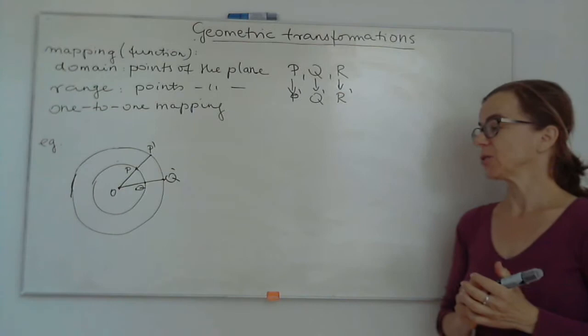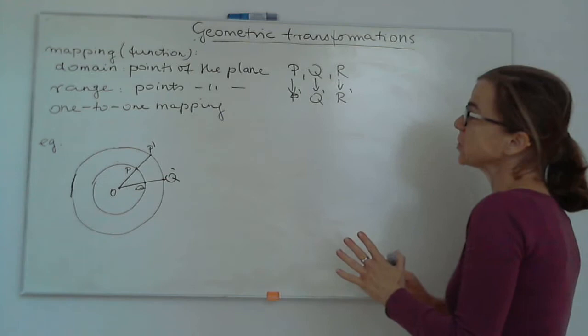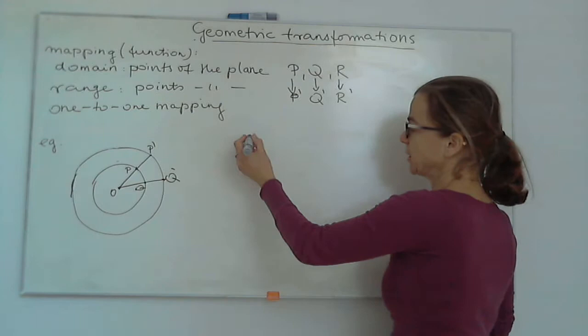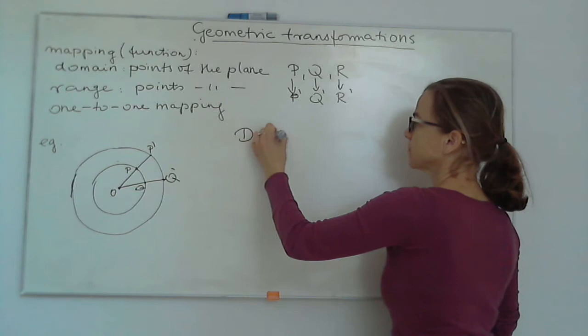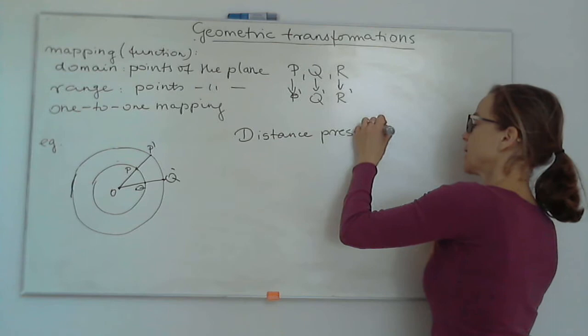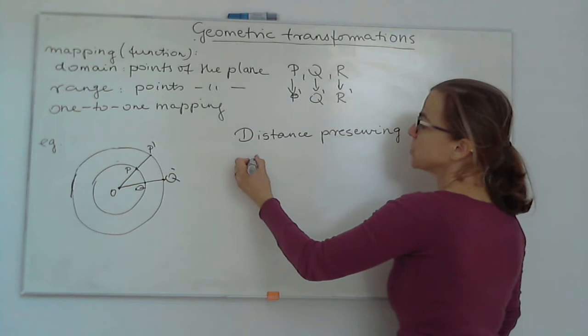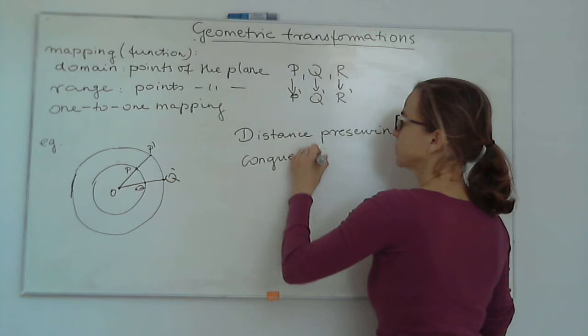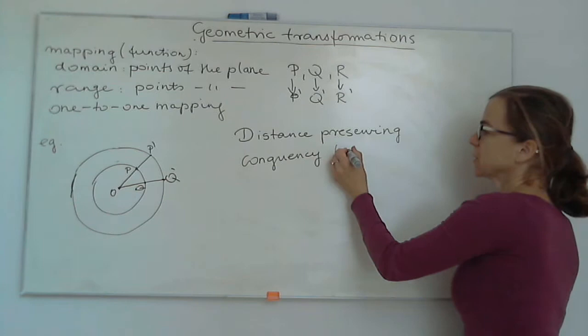Of course, this mapping is not distance-preserving — it's actually an enlargement, which you already learned about in previous years. The special subtype of geometric transformations we are going to deal with this year are called distance-preserving transformations. They preserve distance and have two names, which are synonyms: congruent transformations, or isometries.